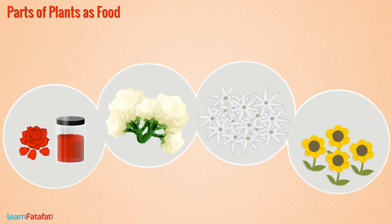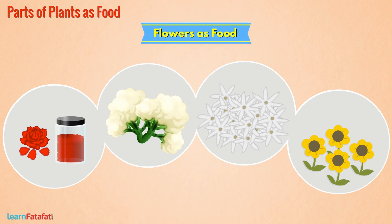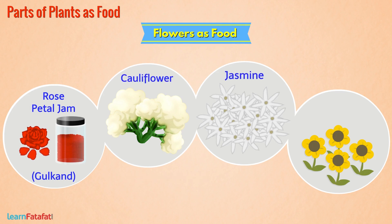Flowers look beautiful. Flowers of some plants are also used as food. For example, the sweet preserve known as rose petal jam, locally called gulkand, is prepared from rose petals. Similarly, flowers of plants like cauliflower, jasmine, and sunflower are also used as food.